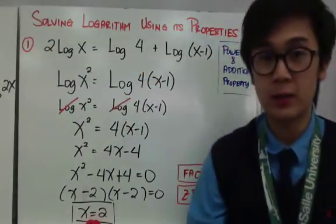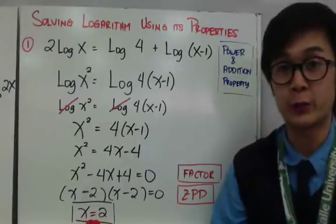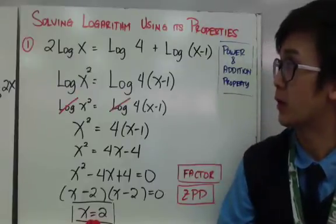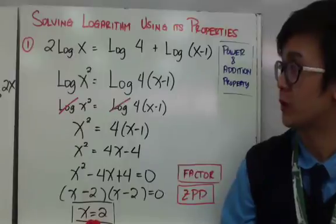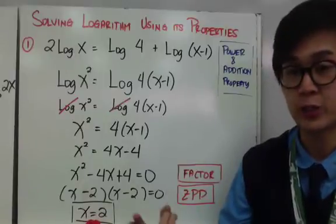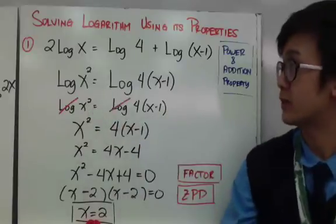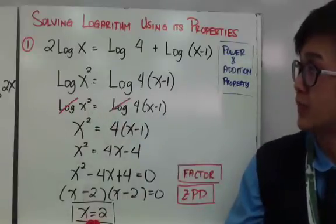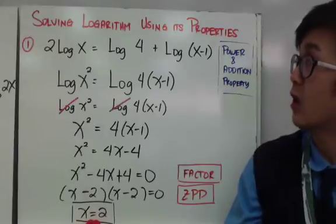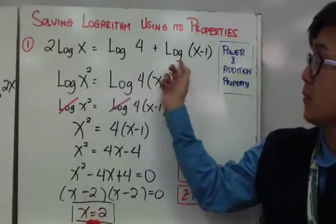In this next logarithmic equation, we are going to use the logarithm properties. We have three properties: the power property, addition property, and subtraction property. For this problem, we have 2 logarithm of x equal to logarithm of 4 plus logarithm of x minus 1.